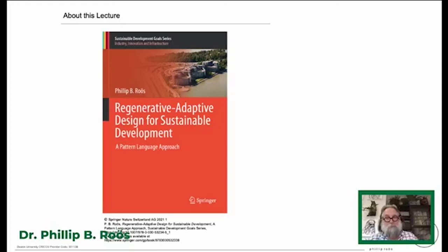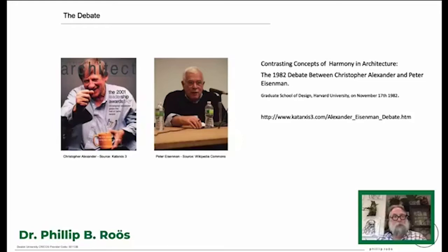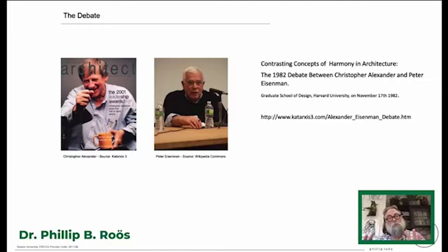In this book, I propose a new theory for design and planning based on the fundamentals of pattern languages, regenerative design, and ecological stewardship. I would start this discussion by going back to the very well-known debate between Christopher Alexander and Peter Eisenman in 1982. This legendary debate took place at the Graduate School of Design, Harvard University, on November 17th. Not long before it, Alexander had given a talk on the nature of order — his four-volume publication, which was to become the subject of his magnum opus of architectural philosophy.